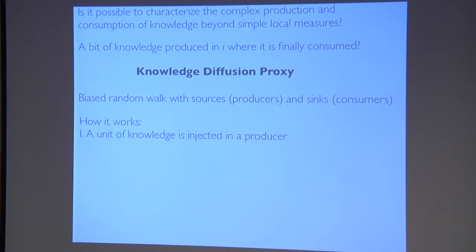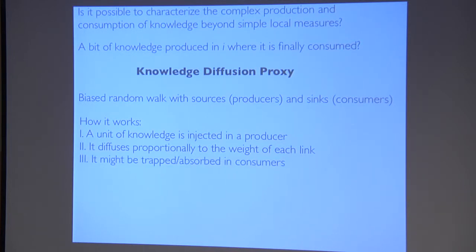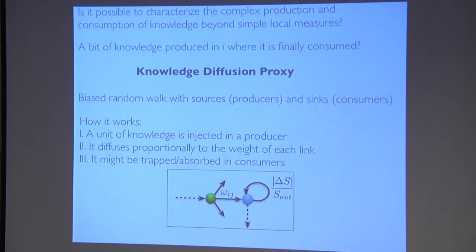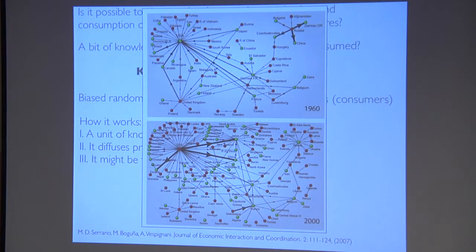It is physically a biased random walk with sources that are the producers and sinks that are the consumers. It's very simple: you introduce a unit of knowledge in a producer, let it diffuse following the weights in a biased random walk, and whenever it finds a consumer, it might be absorbed. You repeat this many, many times for each producer, and characterize the complex hidden web of knowledge between producers and consumers. This is a generalization of the dollar experiment measure by Serrano, Bugugnev, and Spignani for economical networks.